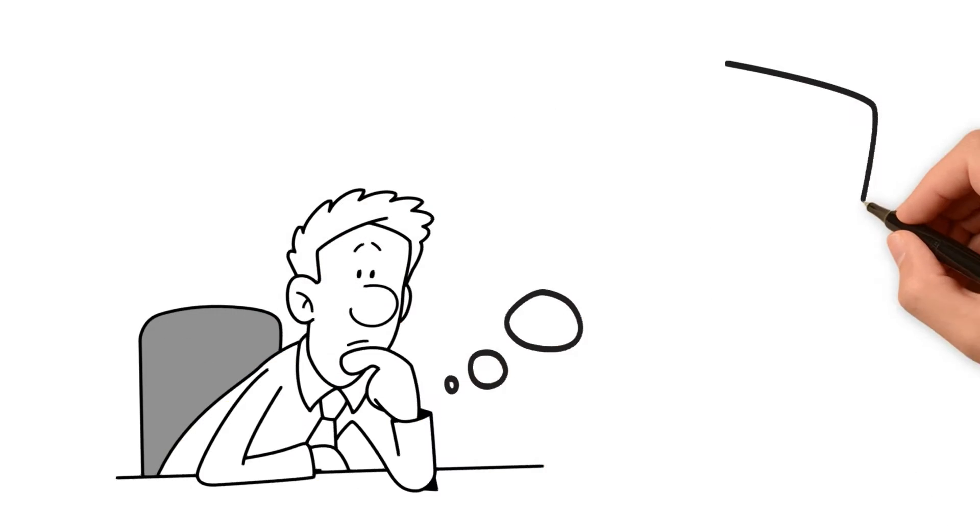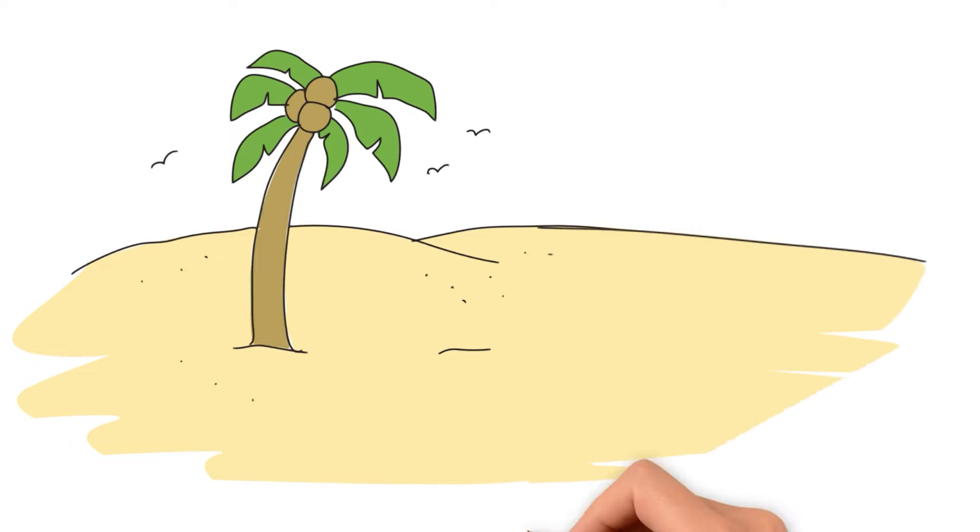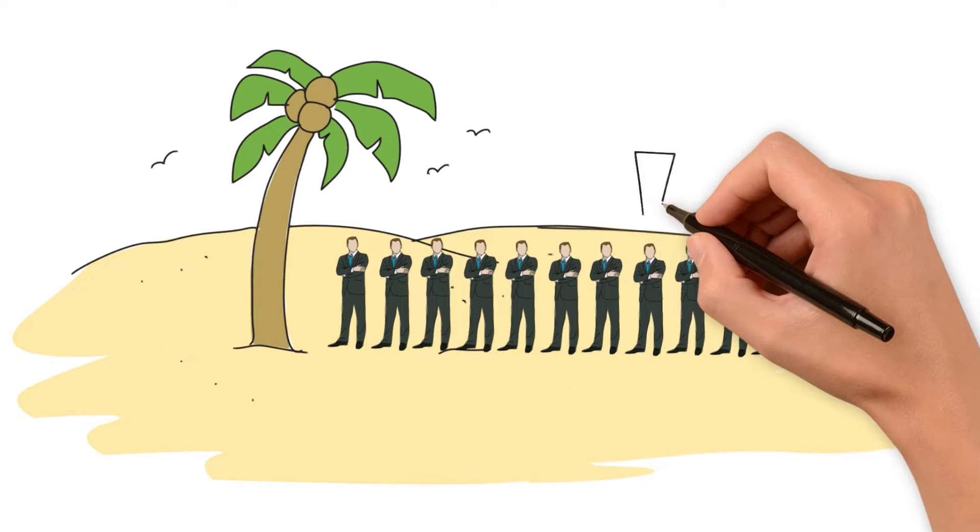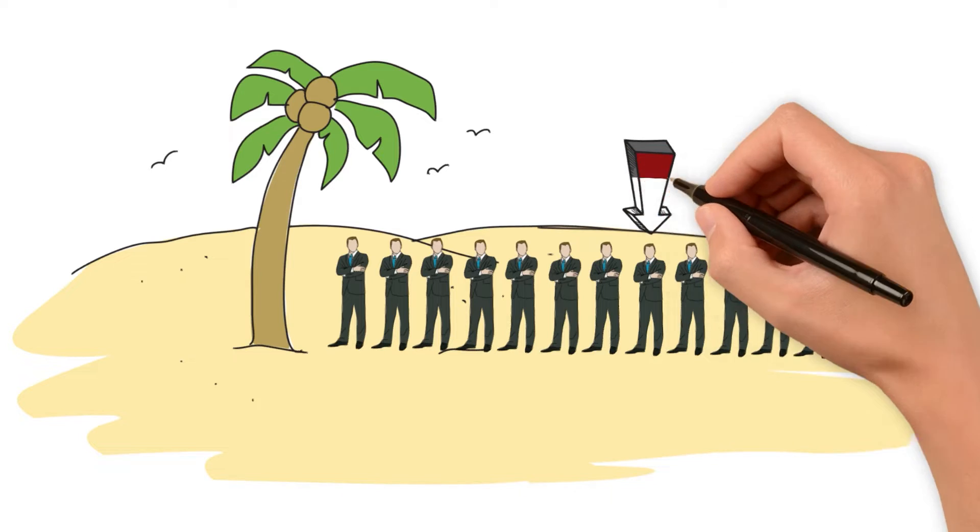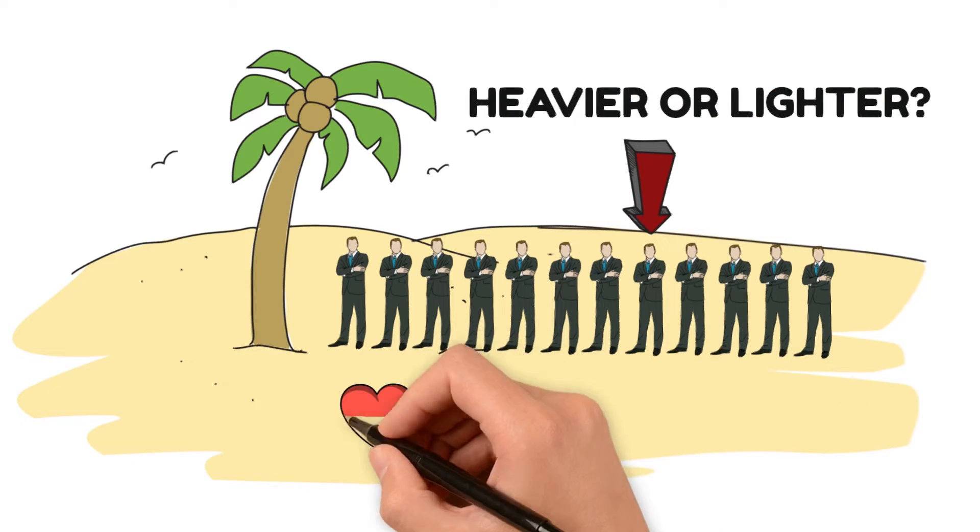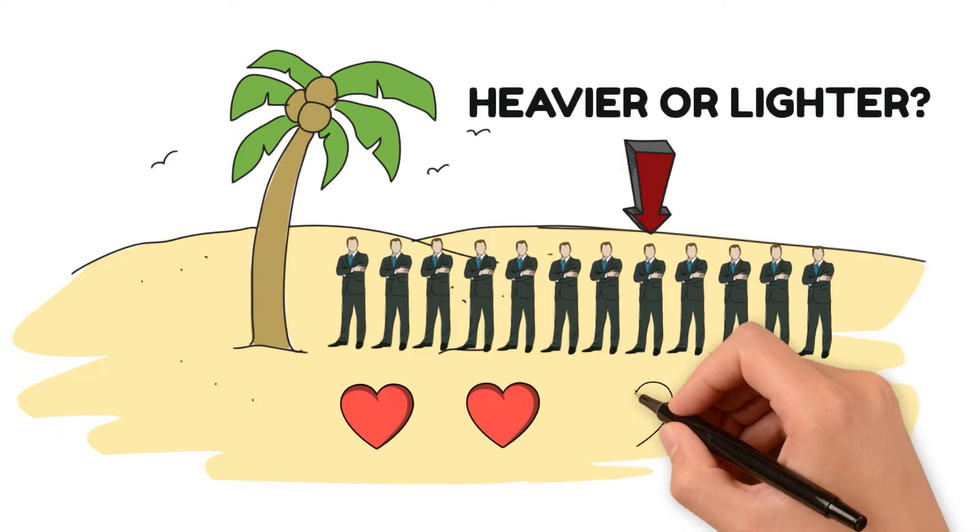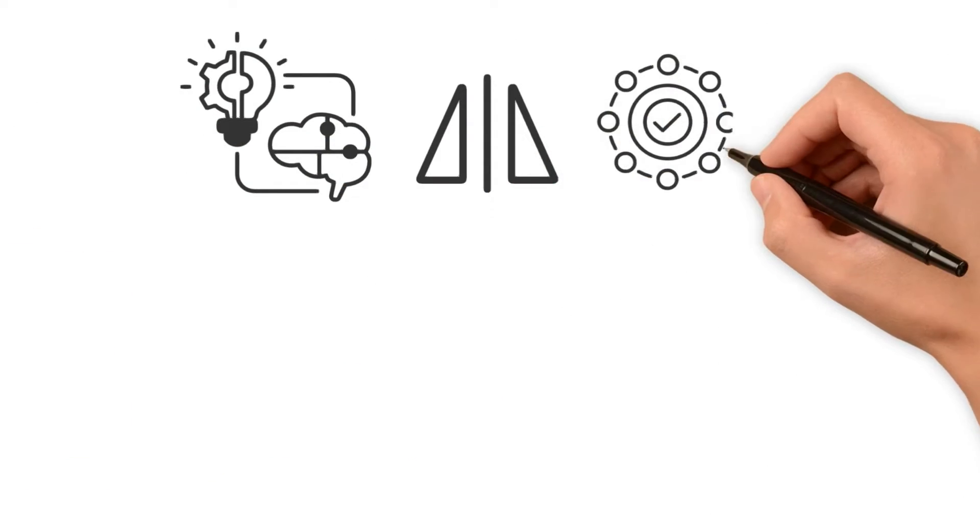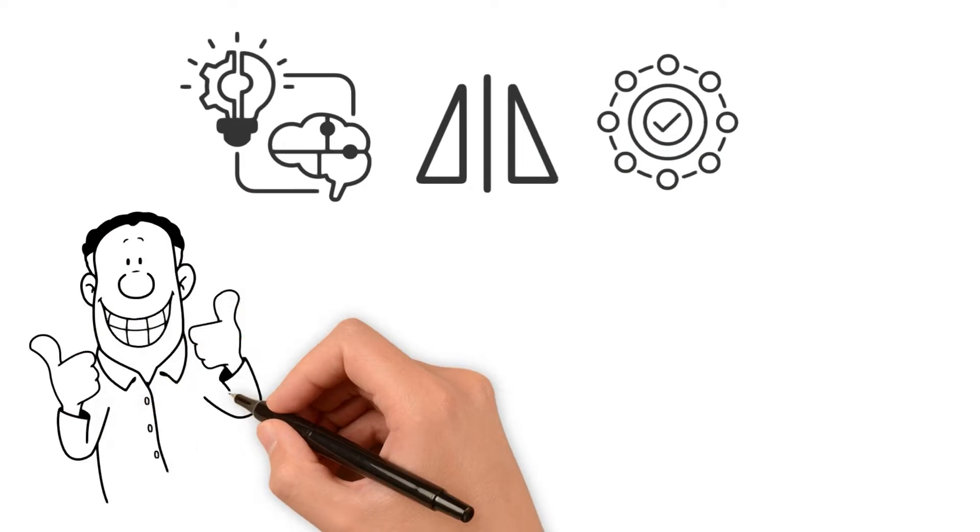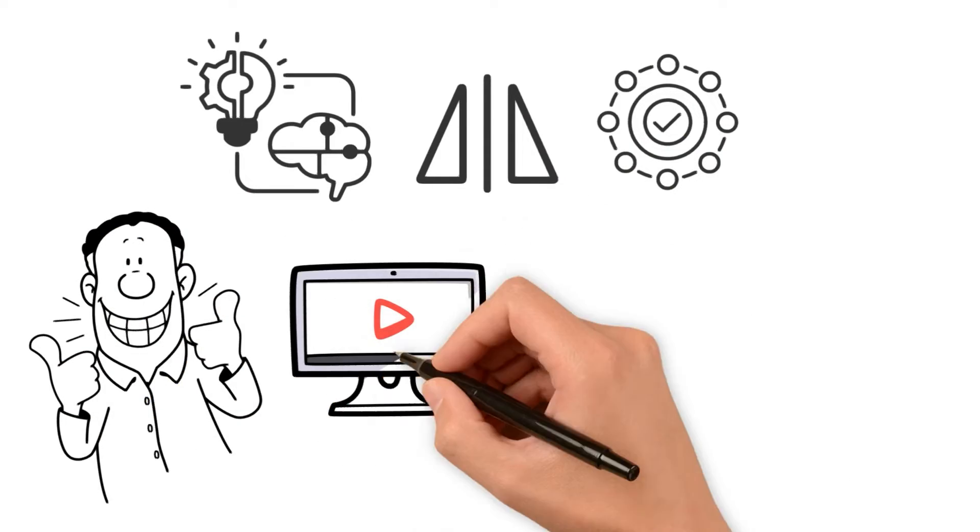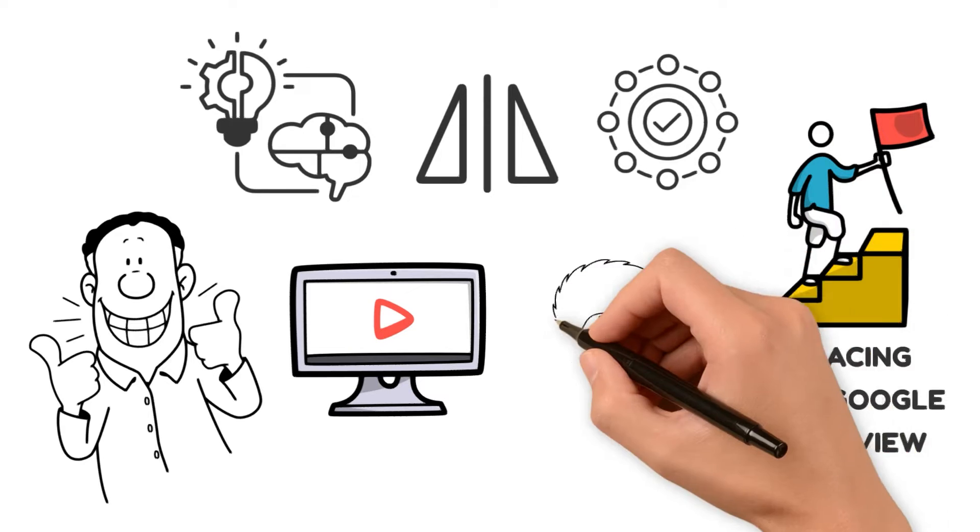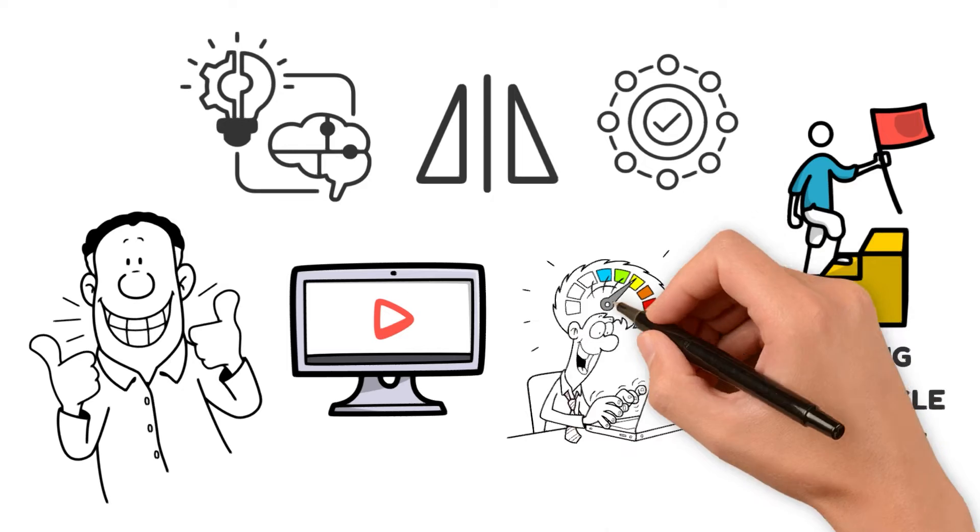Ever wondered how to crack Google's mind-bending interview questions? Today, we're diving deep into the 12 men on an island mystery. It's not just about finding the odd man out, but also whether they're heavier or lighter. And you've got only three chances to figure it out. We're talking logic, symmetry, and an optimized approach that even Google would appreciate. Stick around, because by the end of this video, you'll be one step closer to acing that Google interview. Let's unravel this brain-twisting puzzle, shall we?